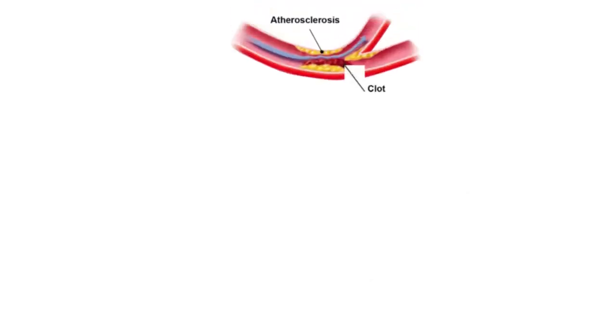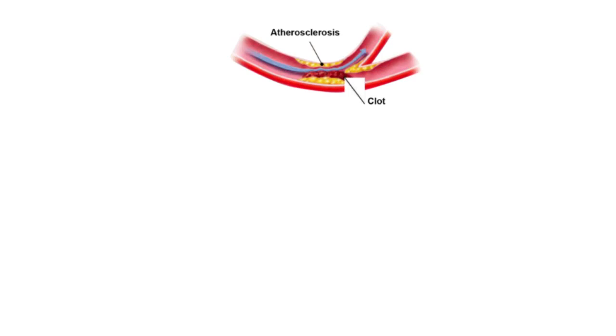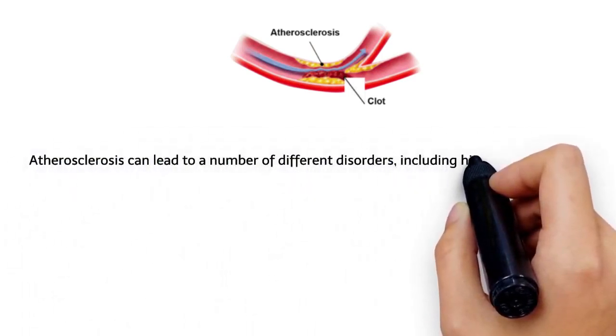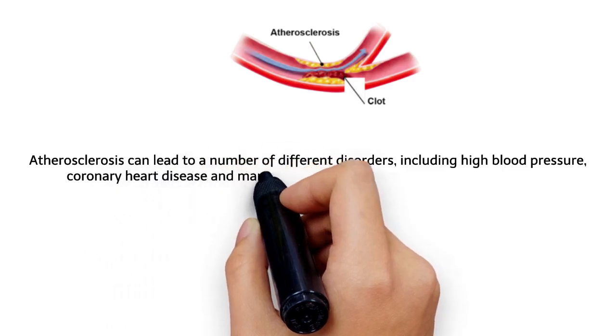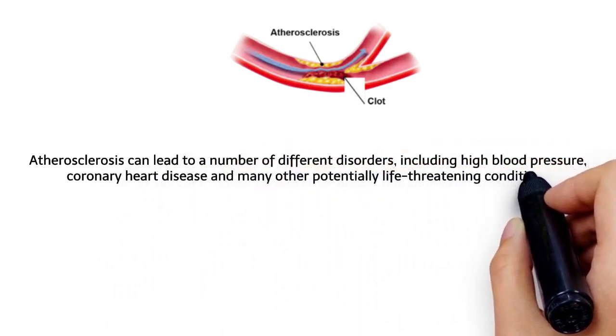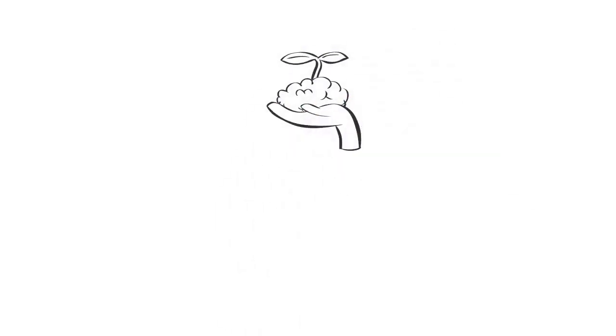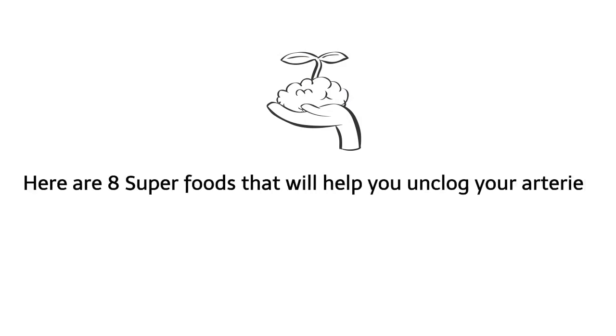The result is a condition called atherosclerosis, which means hardening of the arteries. Atherosclerosis can lead to a number of different disorders including high blood pressure, coronary heart disease, and many other potentially life-threatening conditions. The most effective natural steps you can take to help avoid this condition include changes to your diet. Here are eight superfoods that will help you unclog your arteries.